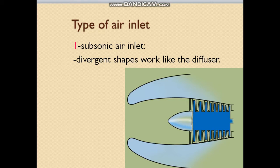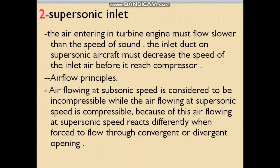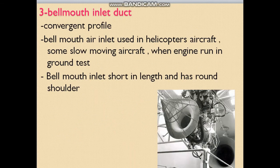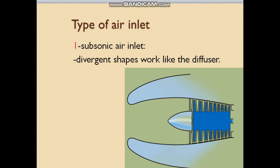Now we will talk about the types of air inlet. We have three types. The first type is called the subsonic air inlet. The second type is the supersonic inlet. The third and last type is the bell mouth inlet. The subsonic air inlet has a divergent shape that works like a diffuser. The function of the diffuser is to decrease the velocity and increase the pressure.